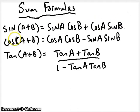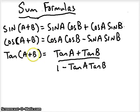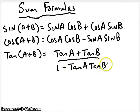The cosine sum formula is a little bit different. If we're adding two angles and taking the cosine, that would be equivalent to the difference, which is a little strange. You do cosine of the first angle times cosine of the second angle, minus sine of the first angle times sine of the second angle. For tangent, we have a quotient: tangent of the first angle plus tangent of the second angle, divided by one minus tangent of the first angle times tangent of the second angle.